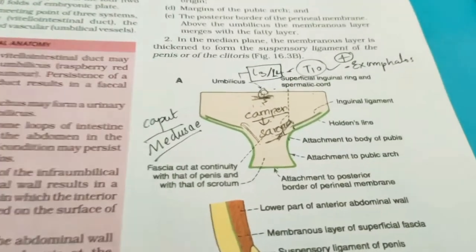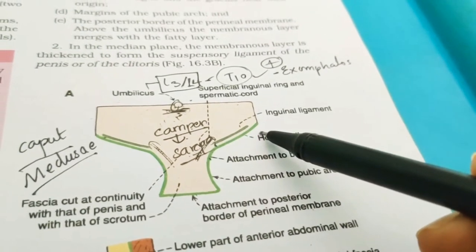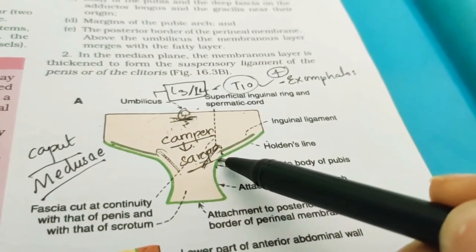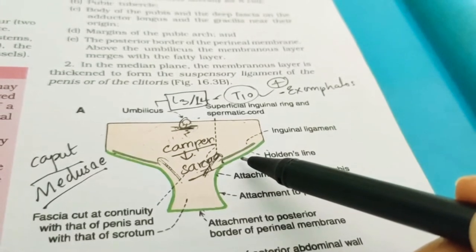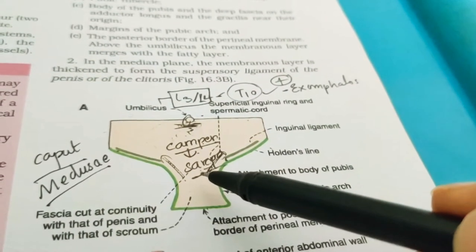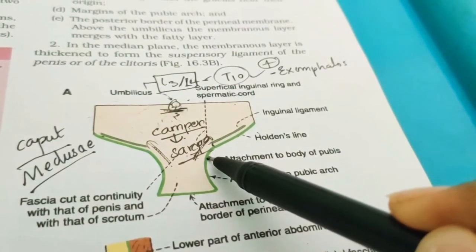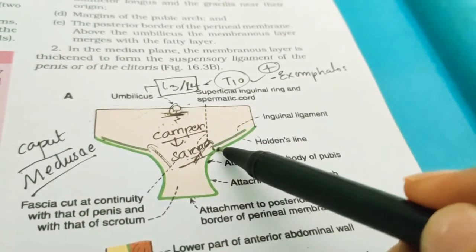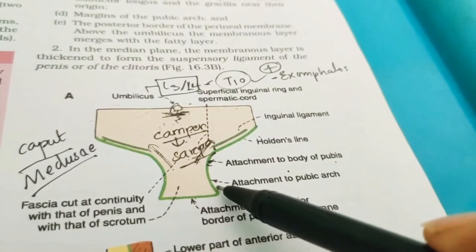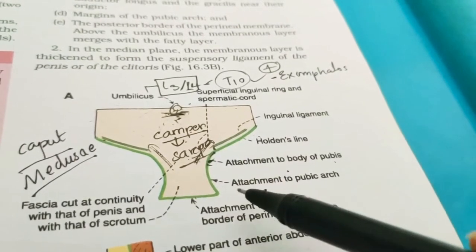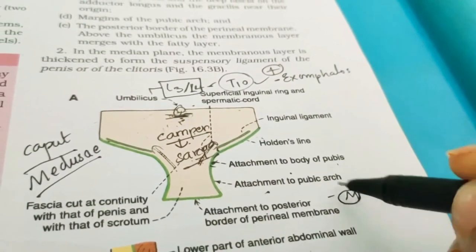Next is Holden's line. It begins a little lateral to the pubic tubercle and extends laterally up to about 8 centimeters. It provides attachment to the body of the pubis, deep fascia on adductor longus and gracilis near their origin. So it starts from the pubic tubercle, gives attachment to the pubis, then continues to the pubic arch.